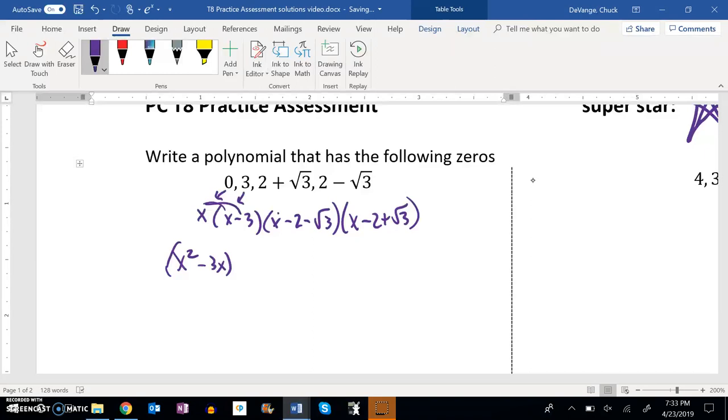I'm just going to distribute everything to everything. So x times x is x squared, x times negative 2 is negative 2x, x times the square root of 3 is square root of 3 times x. Let me keep going. I'm going to distribute this negative 2 to everything: negative 2 times x is negative 2x, negative 2 times negative 2 is positive 4. Notice I'm writing over here because I'm stacking up like terms so I can combine them later. Negative 2 times root 3 is negative 2 root 3.